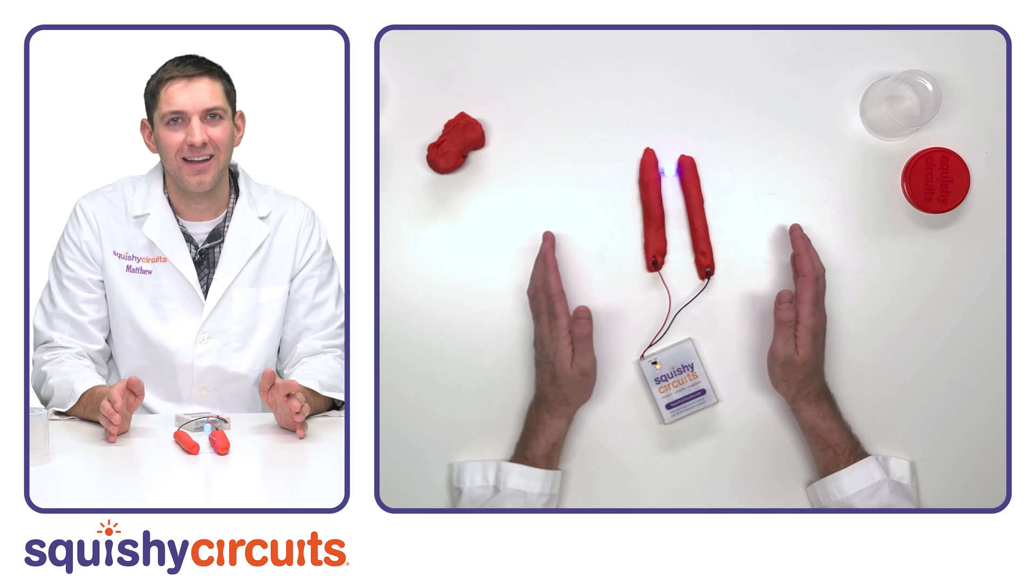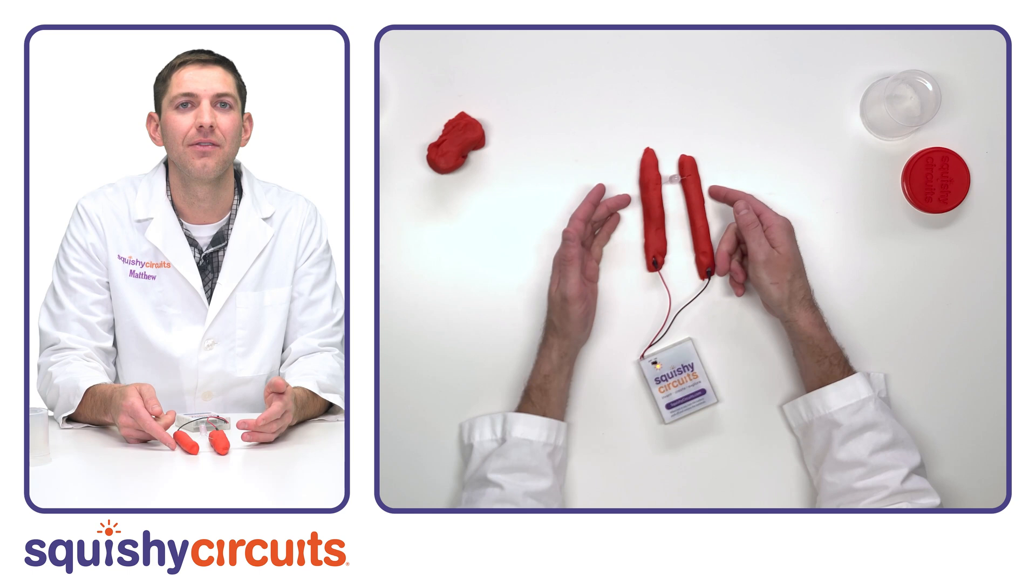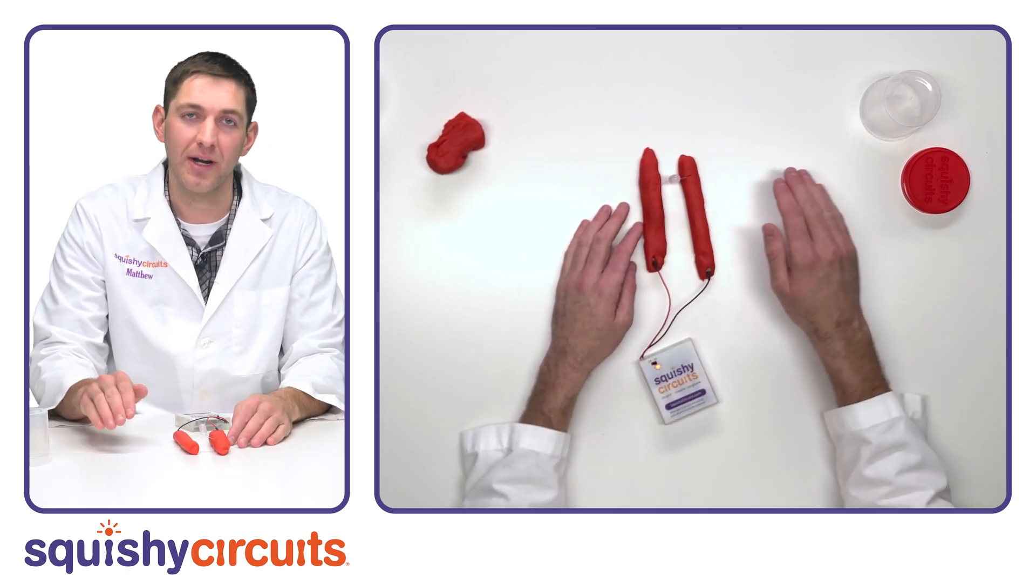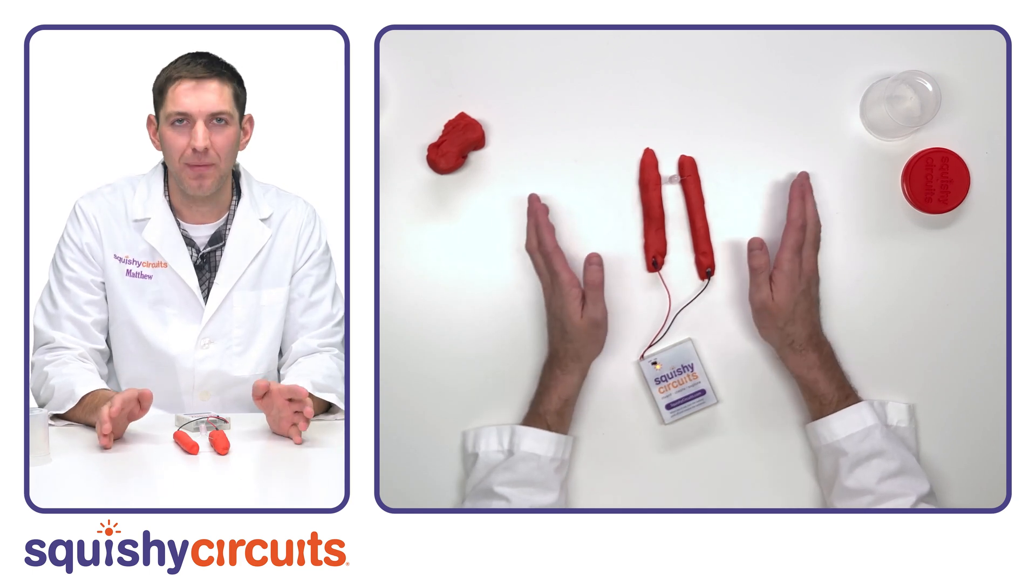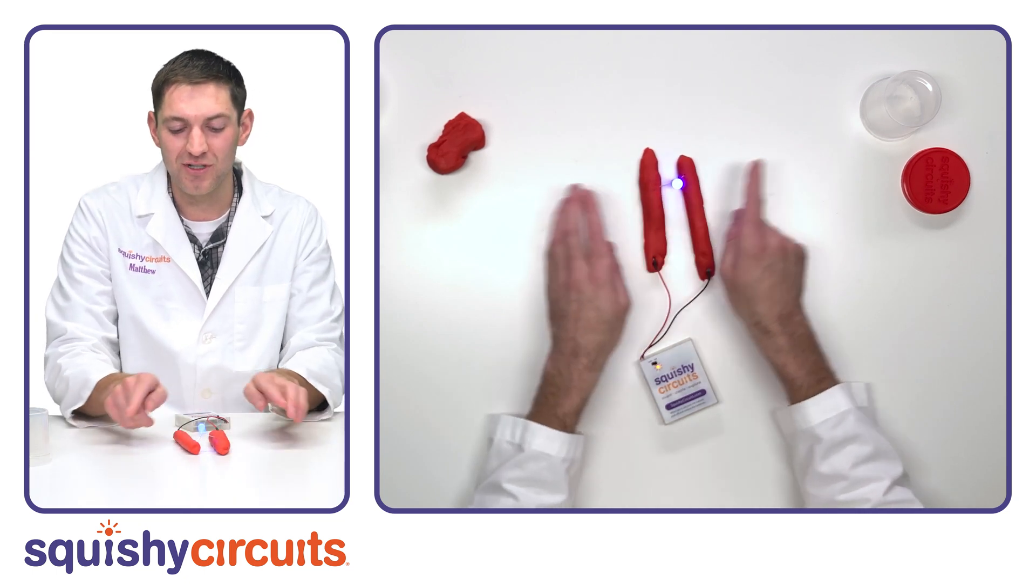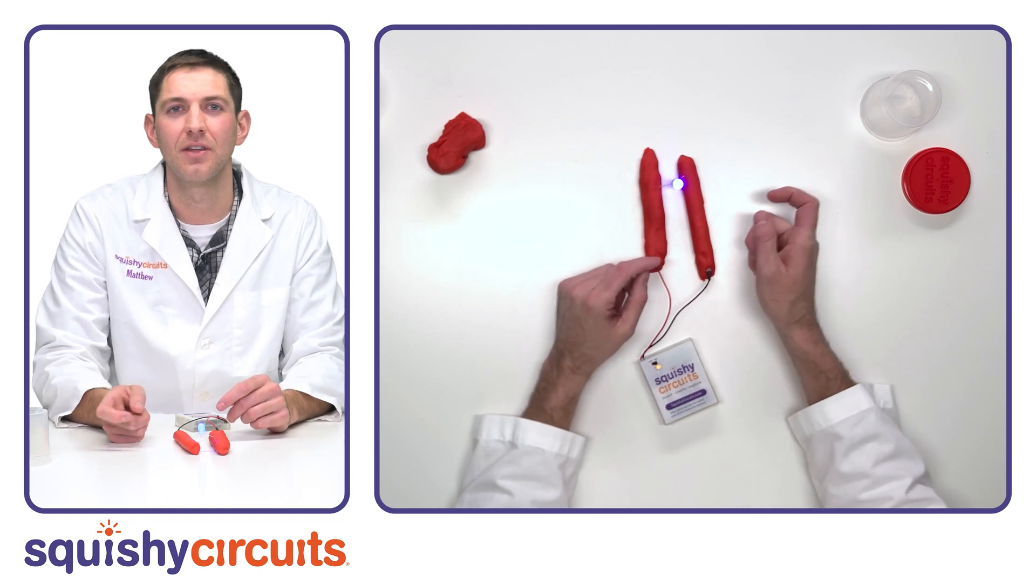If your LED isn't lighting up, try to take it out and flip it around. You'll notice when I do that, the LED turns off. That's because electricity can only flow one direction through an LED. That property is called Polarity. When making squishy circuits, we generally just try the other way if it doesn't turn on the first time, because when those terminals are separated, it can be very difficult to tell which is a little bit longer than the other.